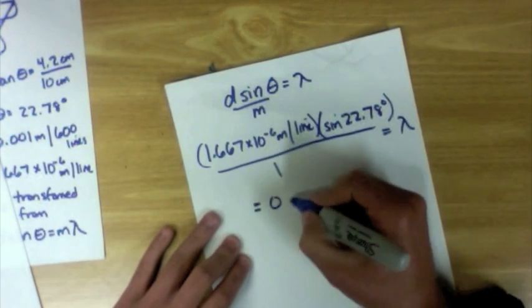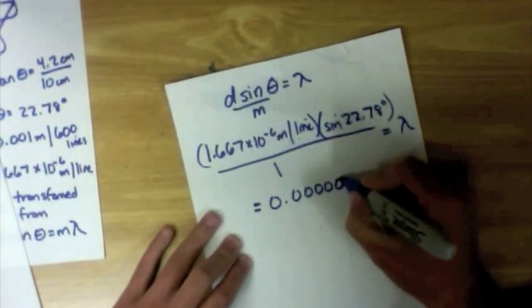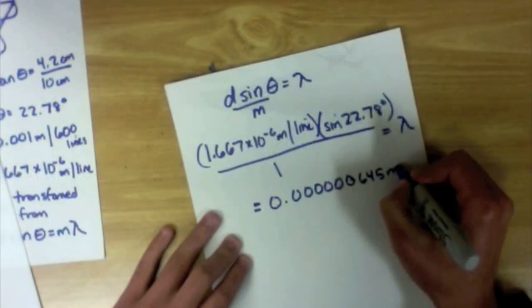After calculating lambda for the red laser point, we find that it equals 0.000000645 meters.